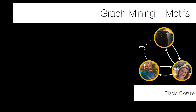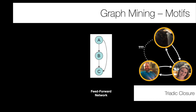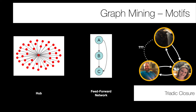We've already discussed triadic closure — when there are strong links between pairs of three nodes, you expect strong links between all three, forming a three-node clique. Feed-forward networks are another motif: A and B are connected, B is connected to C, and transitively A can send information to C — forming another triangle. Hub structures, which we discussed in terms of network centralization, are also a very common motif.